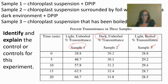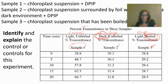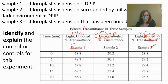Darkness is one experimental group; being boiled is the other experimental group. The control group is Sample 1 — light and unboiled. Think of it as two experiments: one looks at darkness, so the control removes darkness. The other looks at boiling, so the control removes the boiledness.